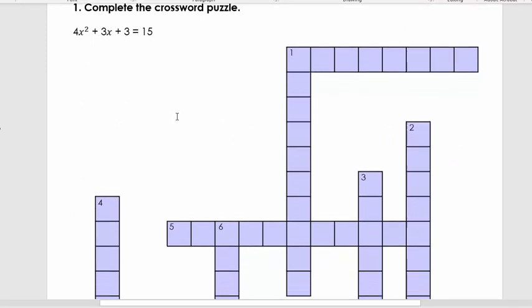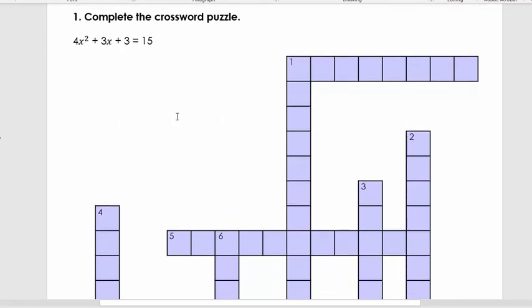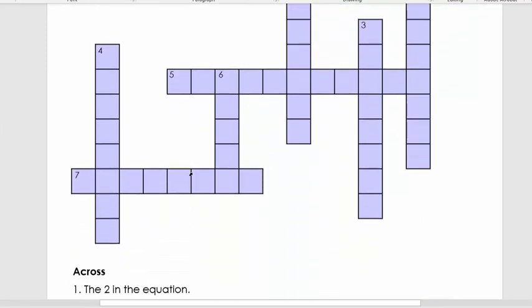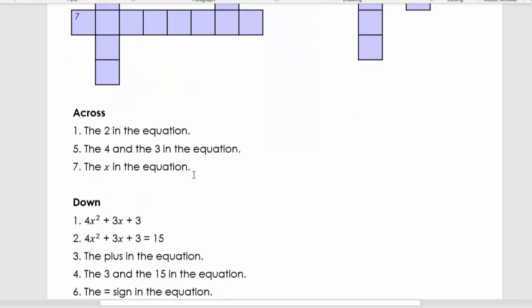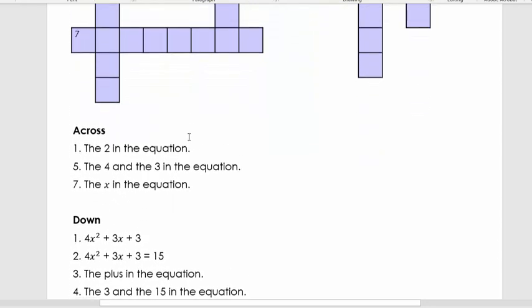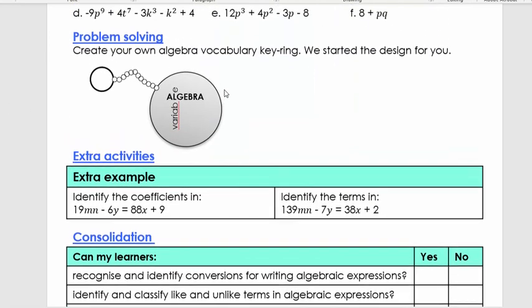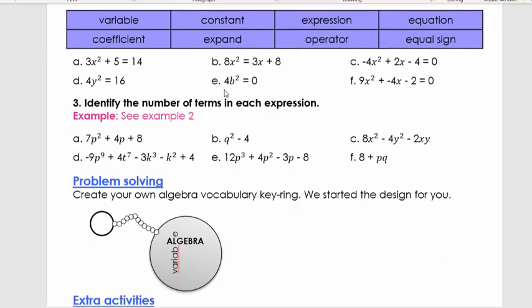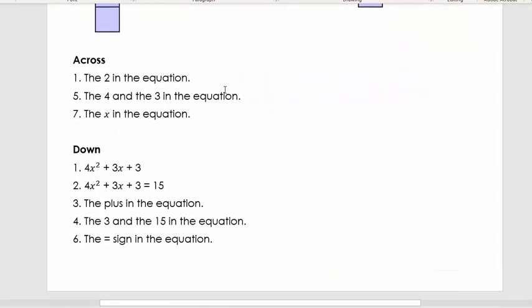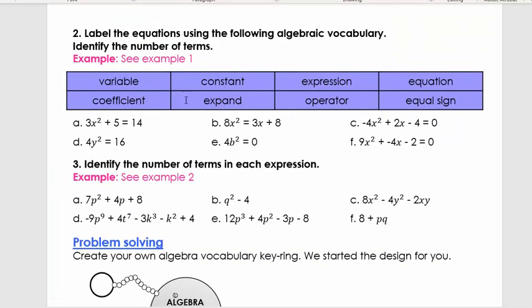We're first going to start with a crossword puzzle. What you're going to do is complete the crossword puzzle by answering the questions and fill it in on your crossword. Then you're going to do question number two and question number three. That's based on the examples we gave to you before, example one and example two. You can always go back on the video, pause there, look at example one and two and do these.